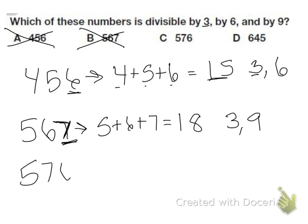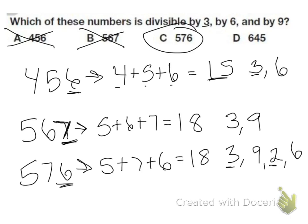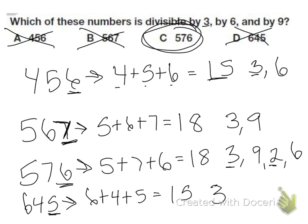Let's do 576. That's 5 plus 7 plus 6, which equals 18. Well, I know 18 is divisible by 3 and 9, and then this number is even, so it's divisible by 2, which means it's also divisible by 6. Because remember, if a number is divisible by 3 and 2, it's also divisible by 6. So this is divisible by all 3. And the last one is 645. We do 6 plus 4 plus 5. 6 plus 4 is 10, plus 5 is 15, which I know is divisible by 3. But since the number is odd, it can't be divided by 2, and 15 is not divisible by 9. So the only one that's divisible by all 3 is C, 576.